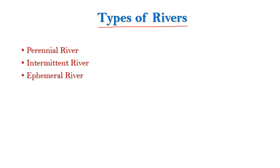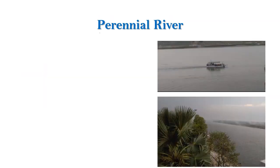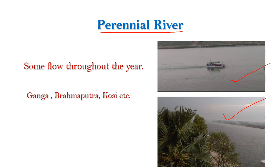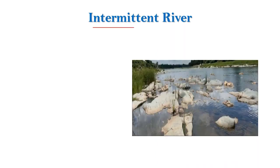and the last one is ephemeral river. Let's discuss each of these rivers one by one. A perennial river is that kind of river which has some flow throughout the year. Mostly Himalayan rivers are perennial rivers. For example, we have river Ganga, Brahmaputra, and Kosi — these are some perennial rivers.